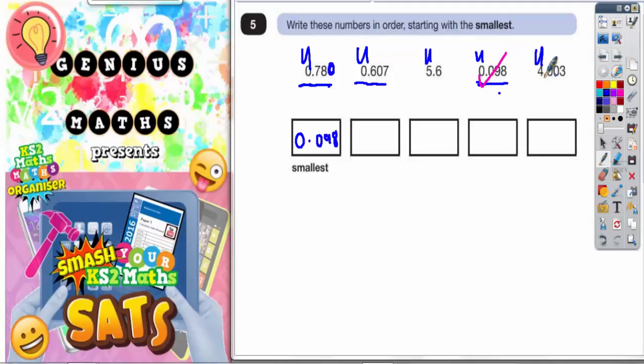Okay. Now what have we got? Well we've still got to do the ones that start with 0.something. So we've got 607 and 780. Well 607 is smaller than 780. So we need 0.607 next. That one ticked off. And then we've got 0.780.